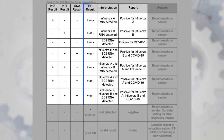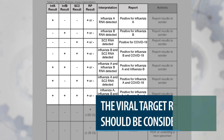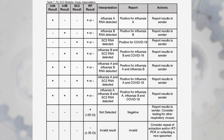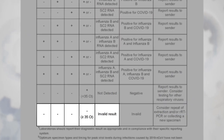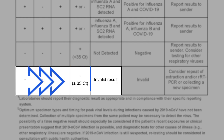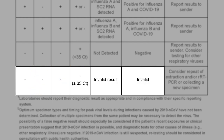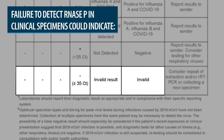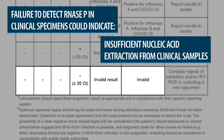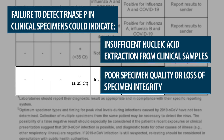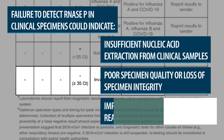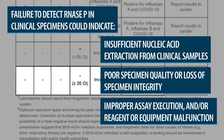If RNAs P is negative in the presence of a positive result for one of the viral targets, the viral target result should be considered valid. However, if all viral targets generate negative results and RNAs P is also negative, the test is considered invalid. Failure to detect RNAs P in clinical specimens could indicate insufficient nucleic acid extraction, poor specimen quality or loss of specimen integrity, improper assay execution, and/or reagent or equipment malfunction.